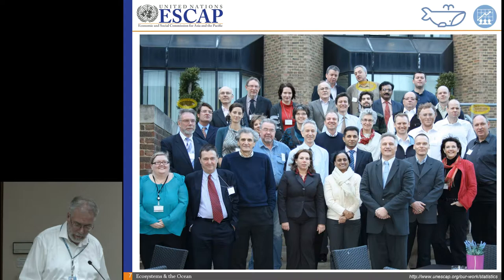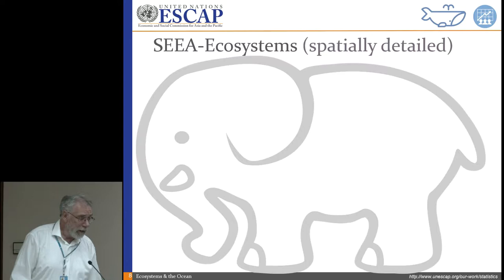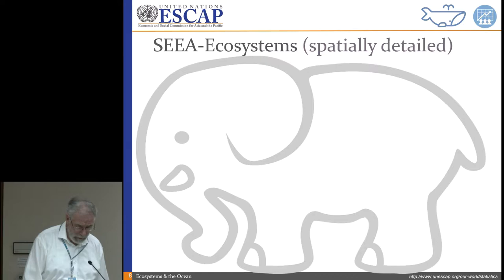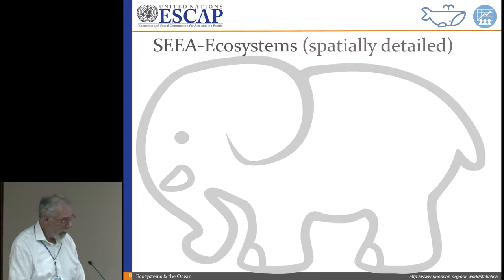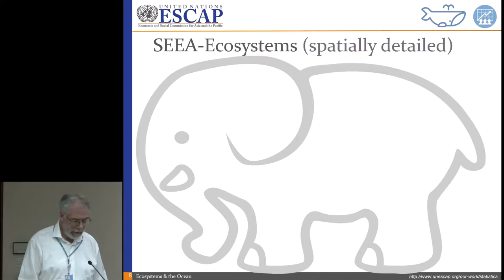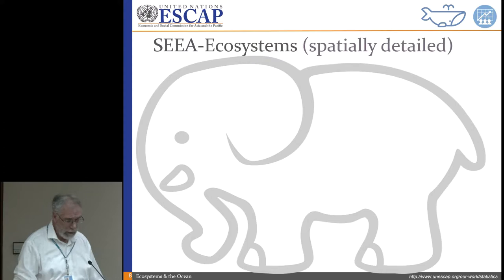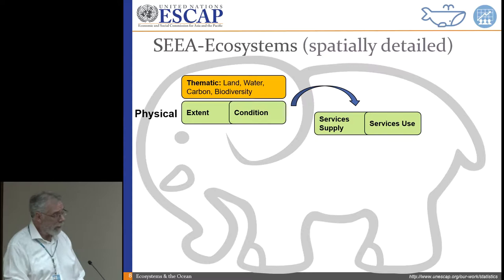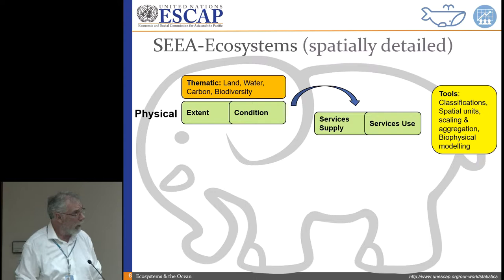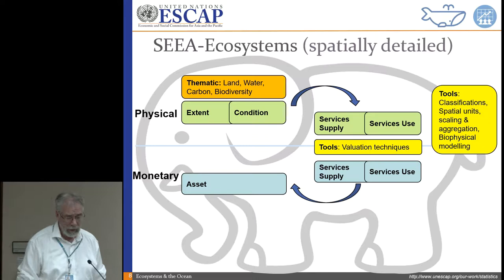SEEA ecosystems uses spatial detail — it involves maps for the most part — and considers ecosystems as living and non-living components of the environment working together. We measure the extent of the ecosystem, the condition, the services they supply, and who uses those services — all in physical terms. We've developed tools: classification, spatial units, scaling, aggregation, biophysical modeling, and the valuation techniques that many people are interested in.